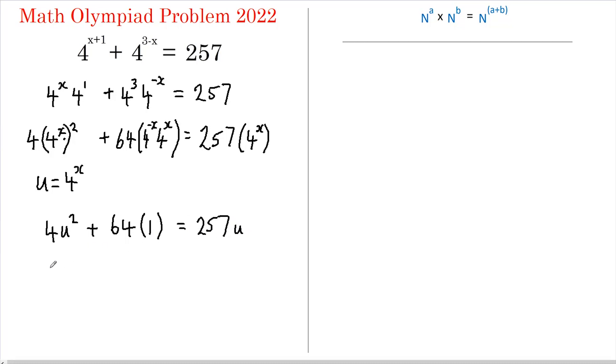Now bringing everything over to the left hand side we've got 4u squared minus 257u plus 64 equals 0. Now to solve this we could use a quadratic formula or we could complete the square but I think we can actually factorize this ourselves, it's not too hard.